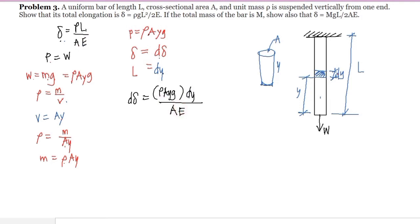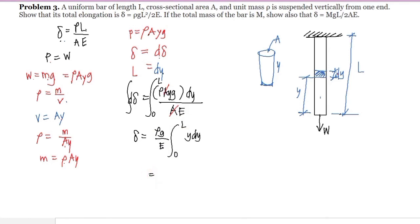We have the limit from 0 to L, so we take the integral from 0 to L. Taking the integral: since density is constant, gravitational acceleration is constant, and the area cancels out, and the modulus of elasticity is constant, we factor those out. What remains inside the integral is Y·dY, so we have rho·G over E times the integral of Y·dY, which equals Y squared over 2.